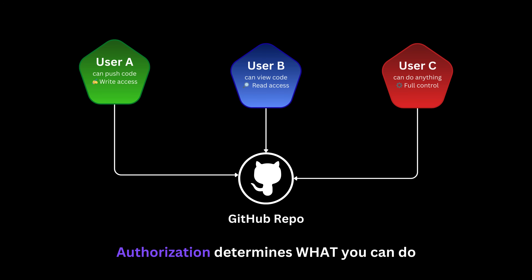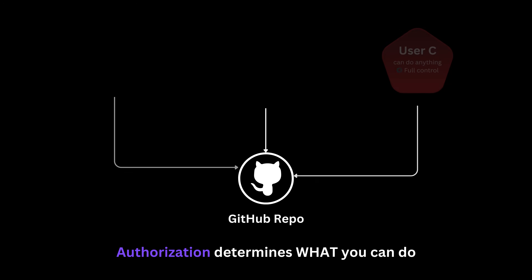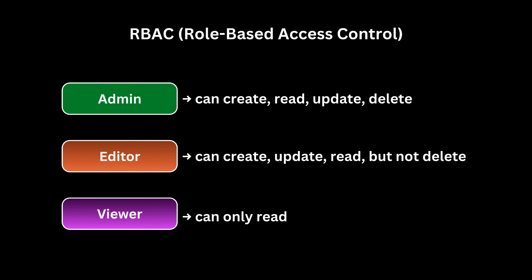To handle this consistently, we use authorization models. The first and most common is Role-Based Access Control. Users are assigned roles — for example, admin, editor, viewer — and each role has a set of permissions. When a user makes a request, the system checks their role and applies the corresponding permissions. For example, an admin can create, read, update, and delete; an editor can create, update, and read but not delete; and a viewer can only read.